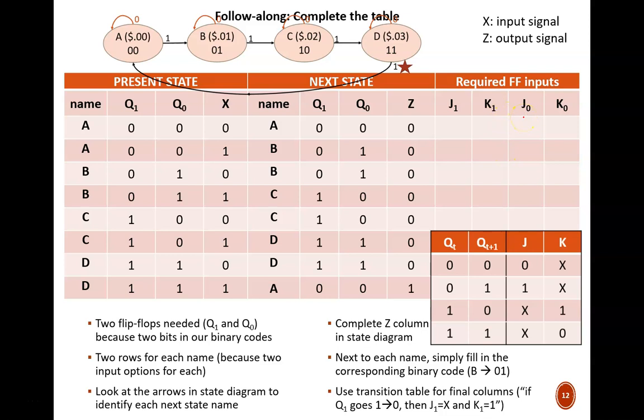Now let's focus on the J and K columns. Here we need to match the subscripts. So for J1 and K1, ignore all the other columns except Q1 present and Q1 next. Then apply the transition table. In the top row, 0 jumps to 0. The transition table tells us that J equals 0 and K equals X, so we fill those in here. Conceptually, this means that the flip-flop could be either in no change or reset mode.